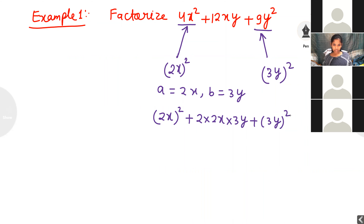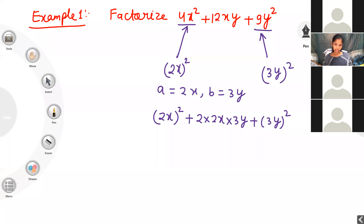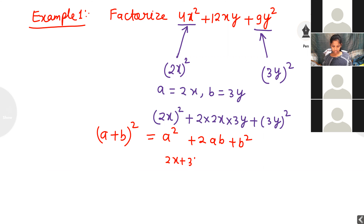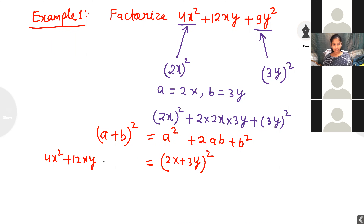Observing carefully: (2x) squared is 4x squared — that is a squared. Then 2 times 2x times 3y is 12xy — that is 2ab. And (3y) squared is 9y squared — that is b squared. It matches (a plus b) whole squared. So 4x squared plus 12xy plus 9y squared equals (2x plus 3y) whole squared, applying the (a plus b) whole squared identity.